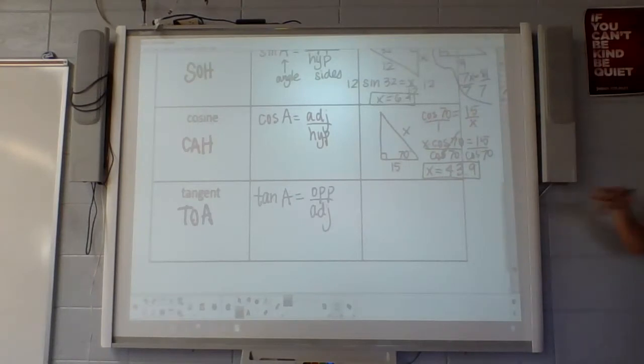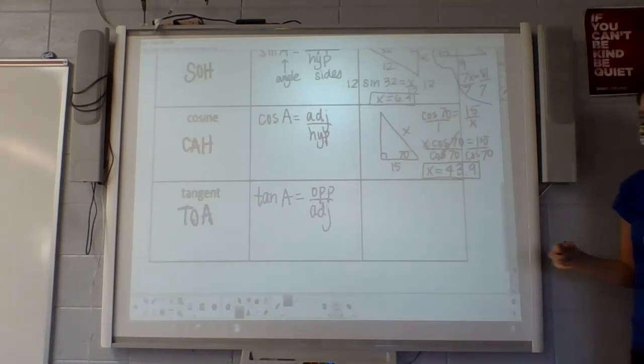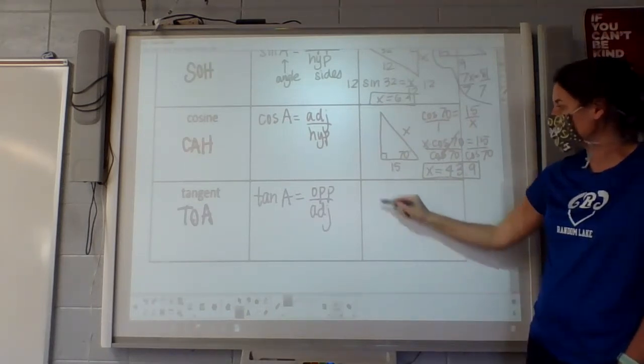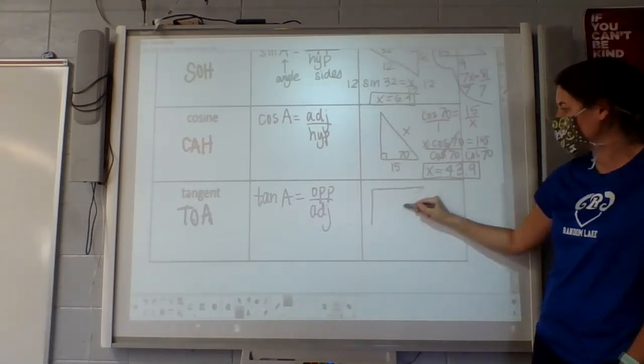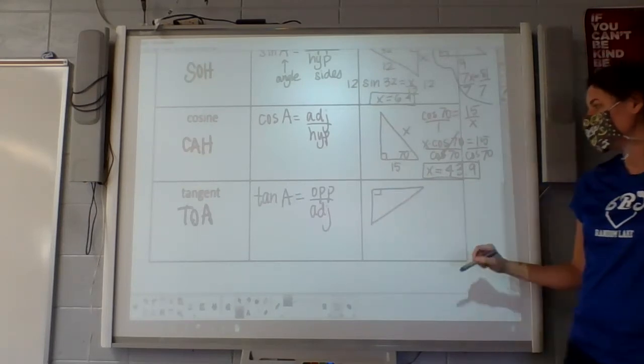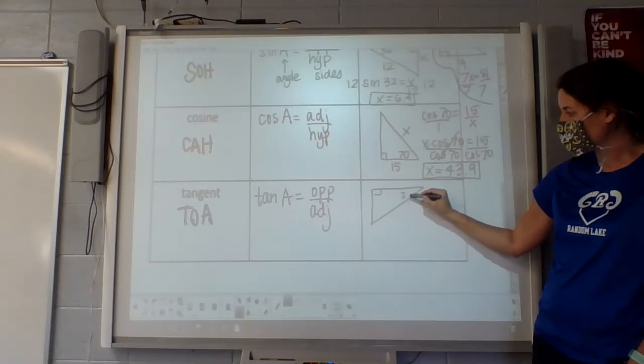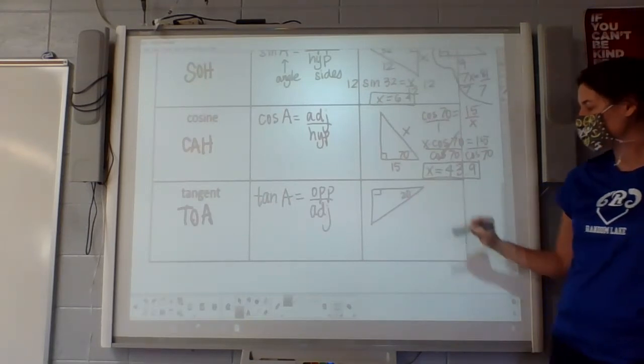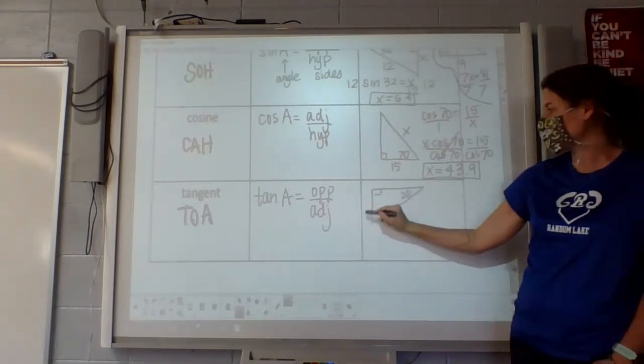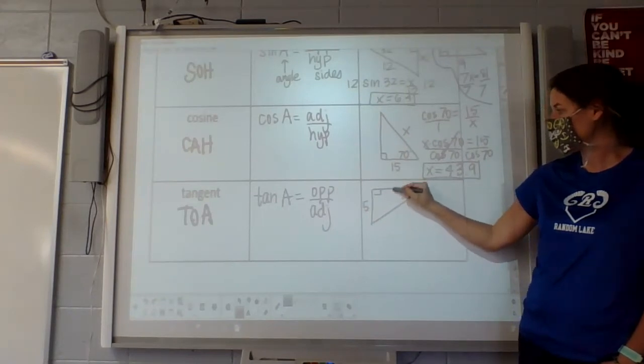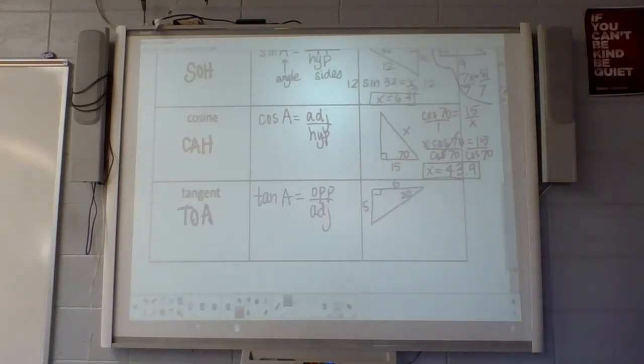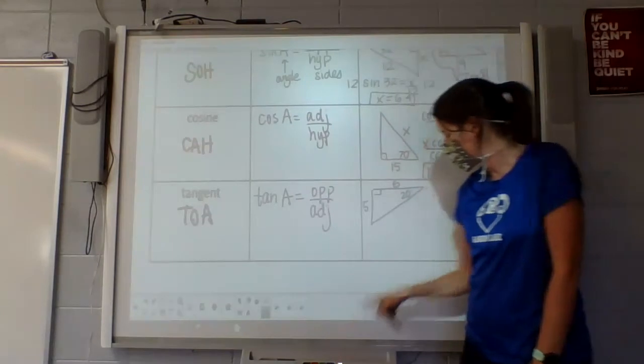So again, knowing SOH CAH TOA kind of bypasses that you have to memorize well, the tangent's opposite over adjacent. I just remember TOA instead to help me with that. So, let's see here. Oh, why did I give you all that? Sorry.